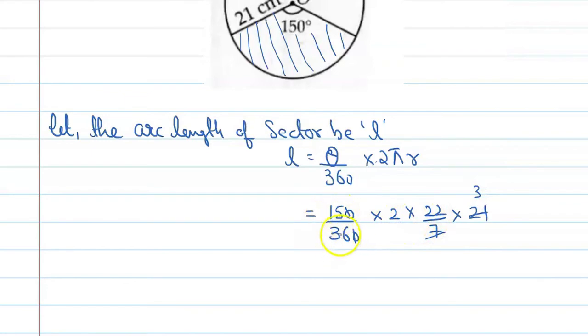And you can cancel 15 upon 36 by the table of 3, that is 5 and that is 12. So, if you calculate this, the value will come to you, 55 cm.